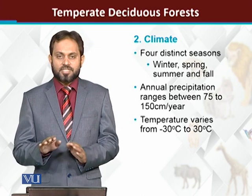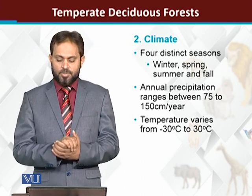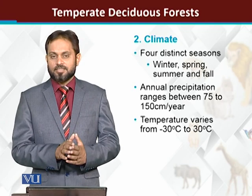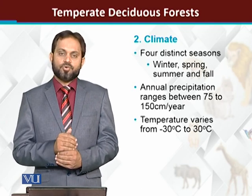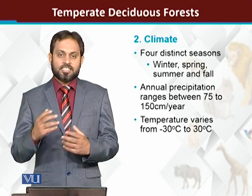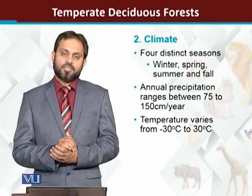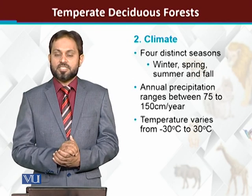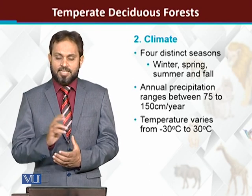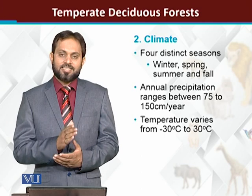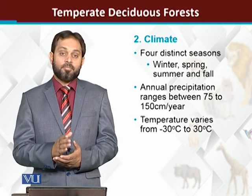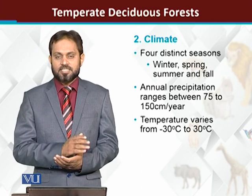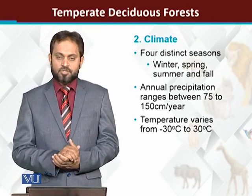There is moderate rainfall and moderate temperature. The term 'temperate' is used because temperate deciduous forests are present in different regions and locations of the world, so temperature conditions vary. On average, temperatures range from minus 30 degrees centigrade to 30 degrees centigrade.